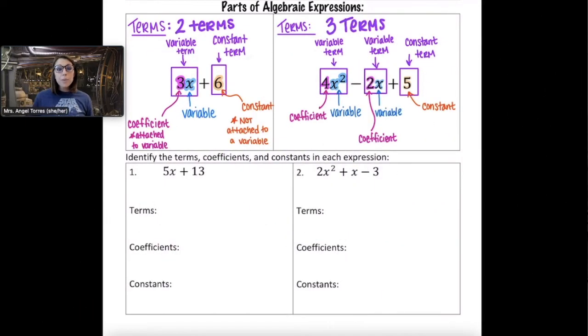So now that we've seen some examples, I'm going to let you try to do numbers one and number two on your own. The questions are, first, how many terms and what are they? Second, what are the coefficients that you see? And third, what are some of the constants that you see? Try this on your own first. We'll go over it together.